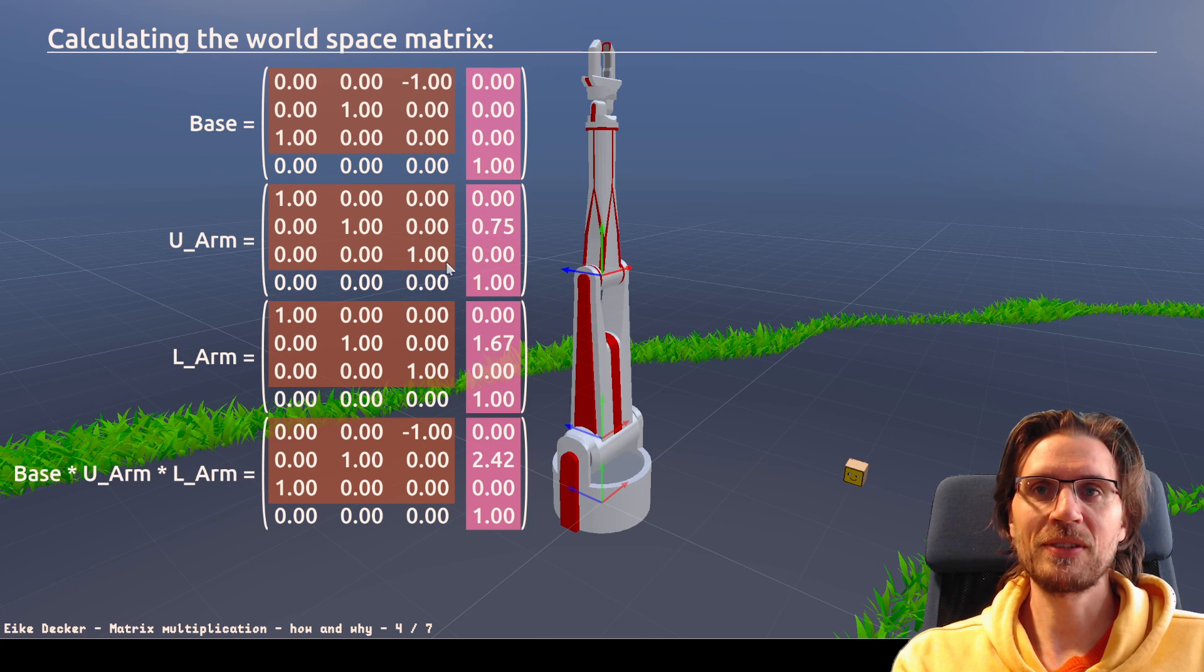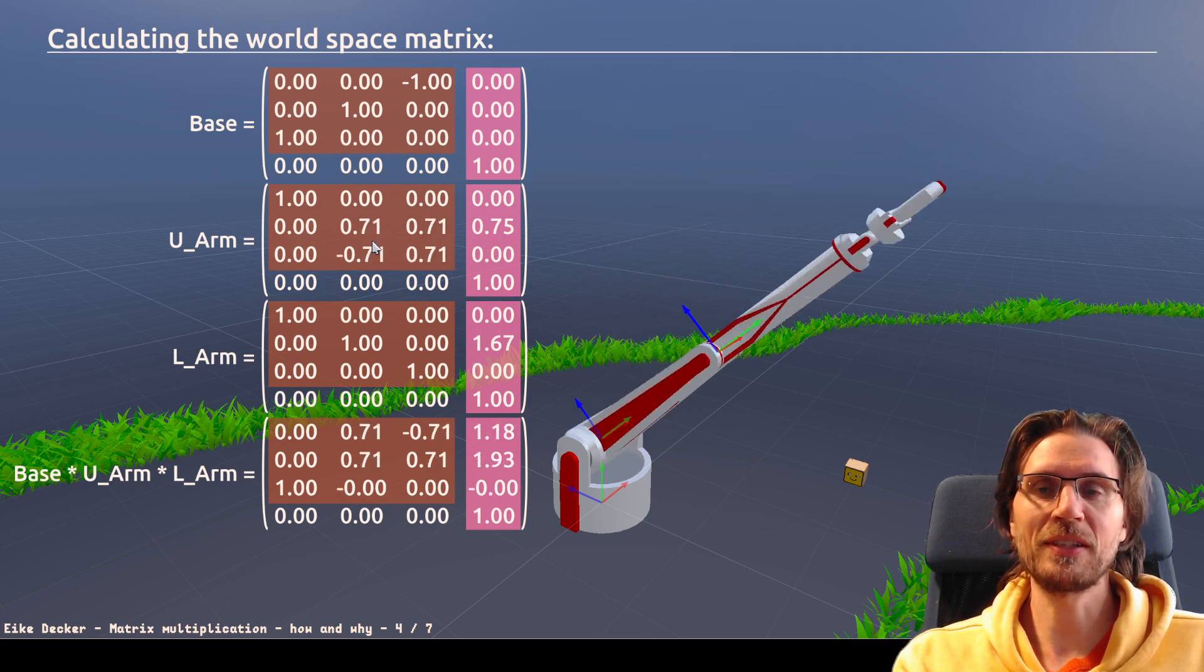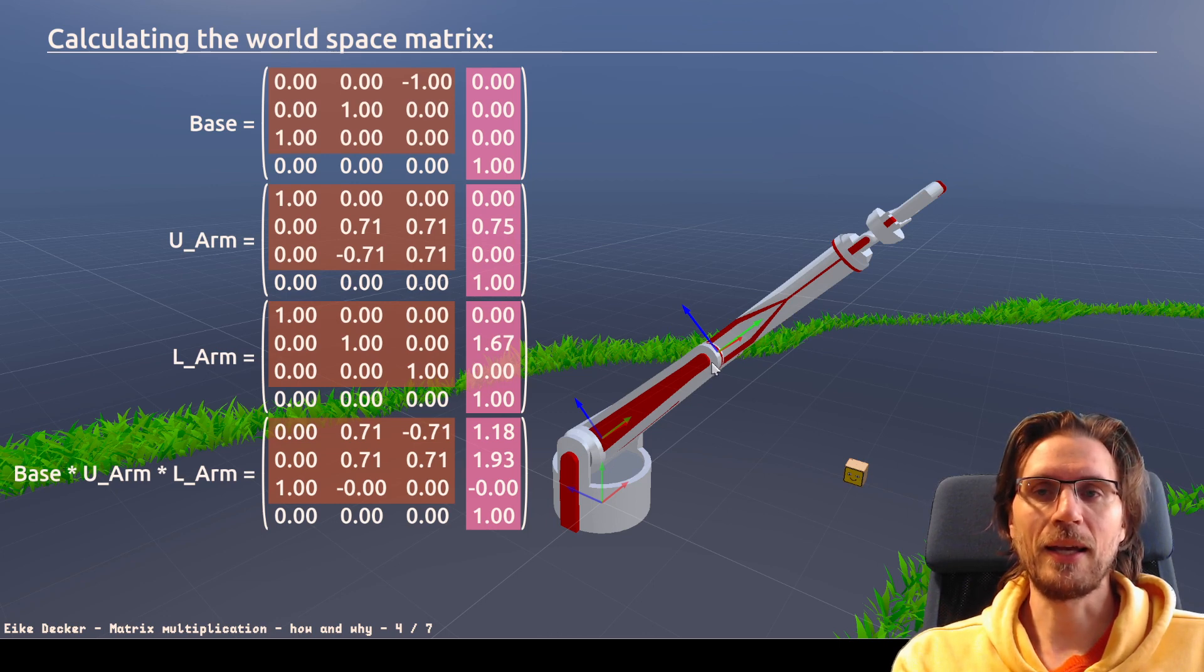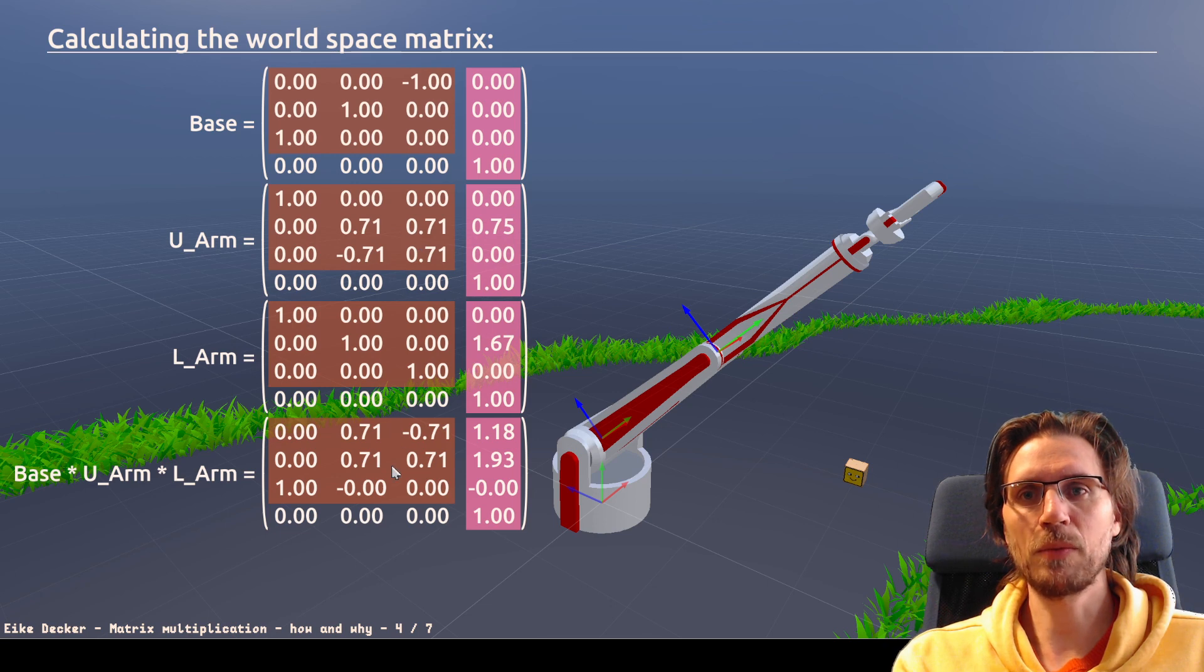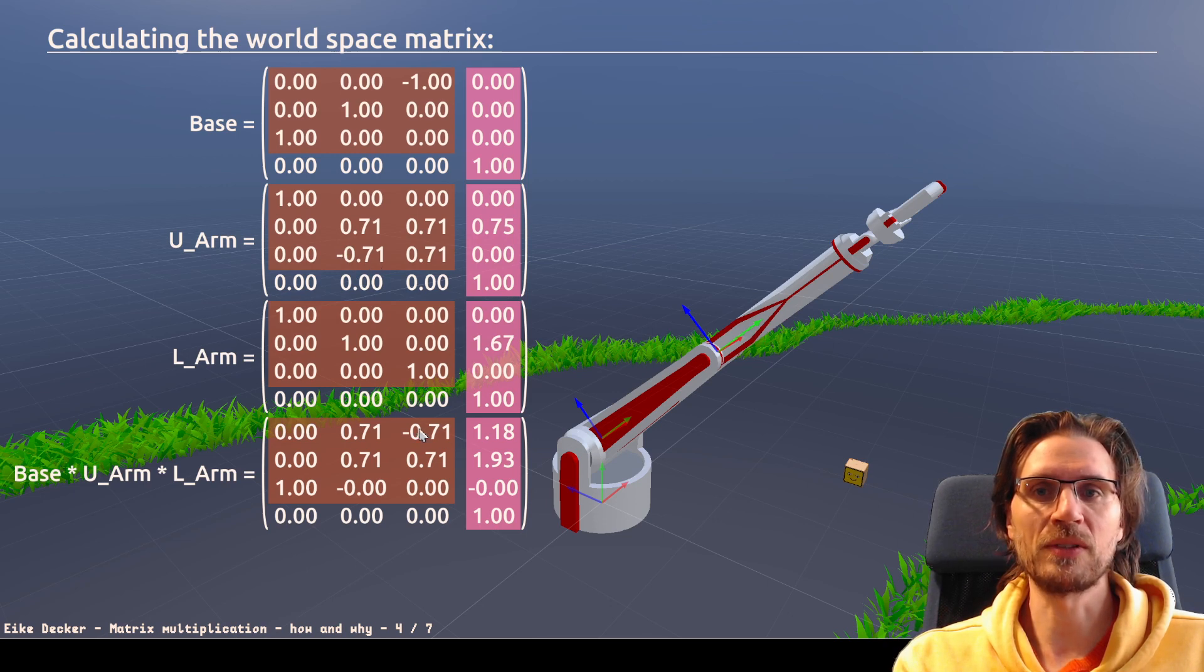And this changes when we explicitly rotate the upper arm. Let's rotate it by 45 degrees. And now you see that this has caused a change down here. And the numbers look similar, but they are in a different place. And they also have different signs. Like here, this one is negative. Now this one is negative.